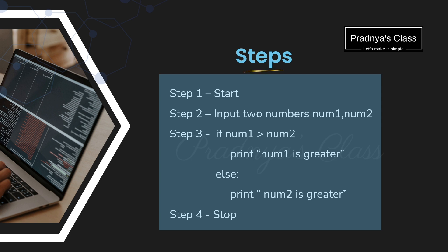So here are the steps to be followed. To compare two numbers, first of all we need to input them — let's call them number 1 and number 2. Now it's time to compare these two numbers. To compare, we will be using comparison operators, also called relational operators. After comparing, we need to take some action, so we will be using the conditional statement 'if'.